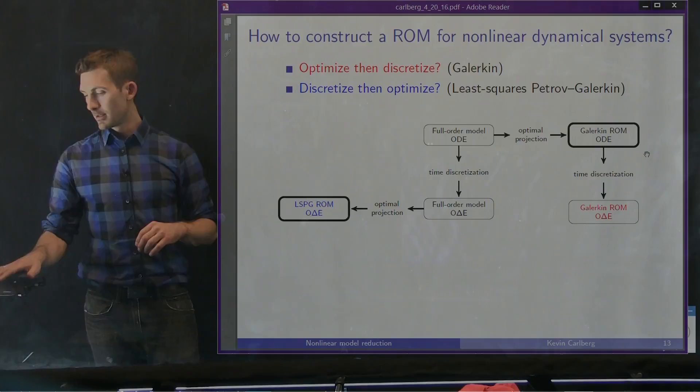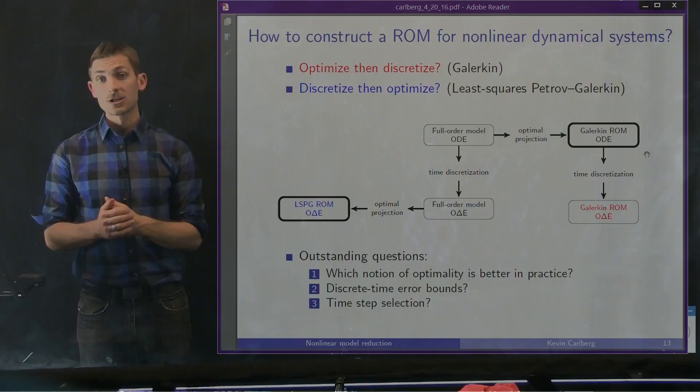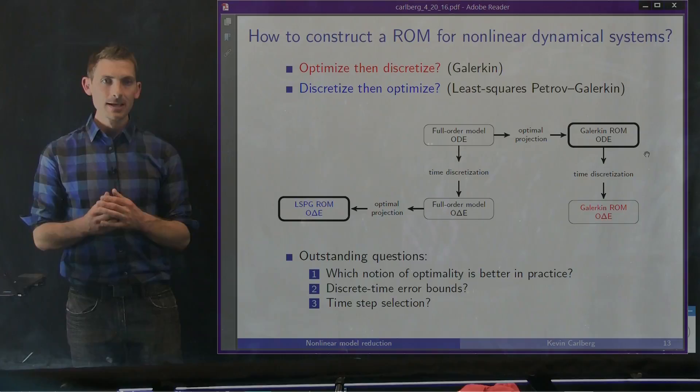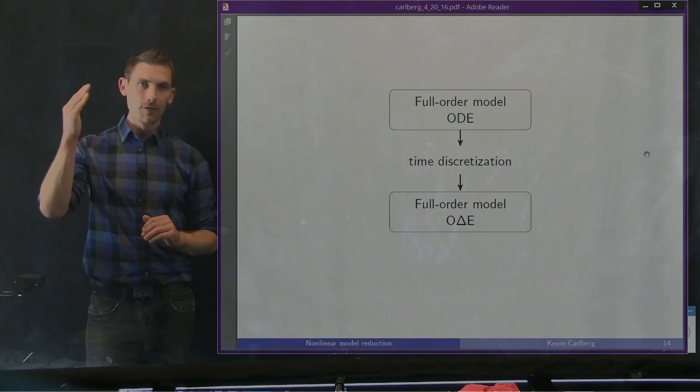This raises a few questions we'd like to answer. Number one: which notion of optimality is better in practice — is it better to be discrete-optimal or continuous-optimal? Number two: can we devise time-discrete error bounds that allow us to compare the two methods? And finally: how do we choose discretization parameters such as the time step to optimize the performance of these techniques?